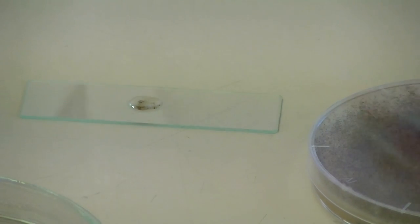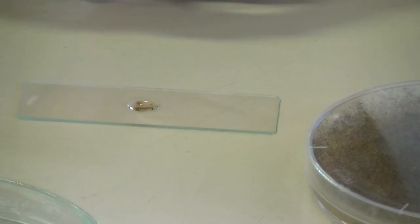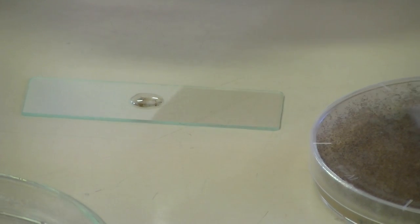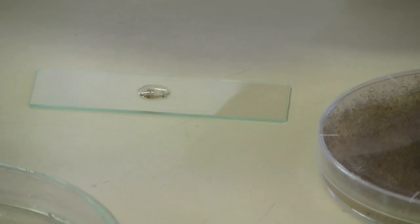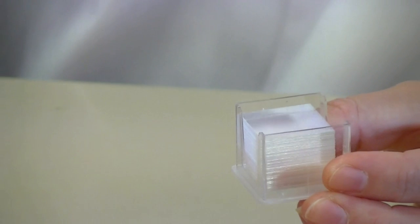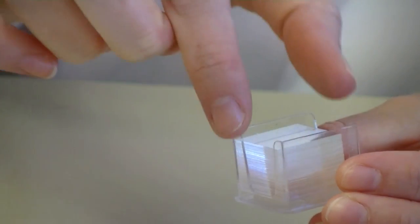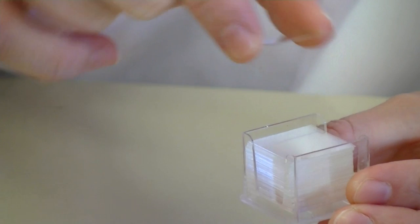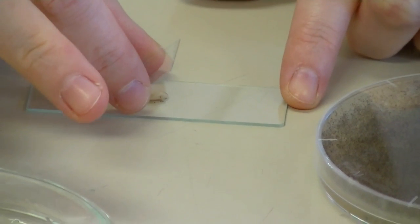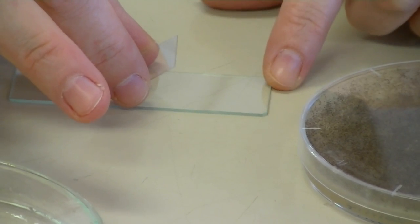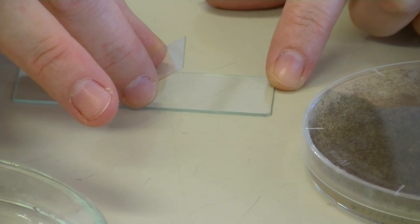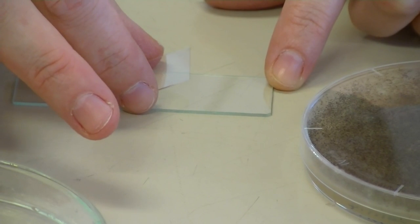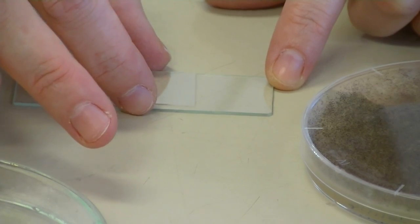And now we need to place a cover slip over our sample. So you should have a container of cover slips. Be very careful when removing the lid because you don't want them to fly all over the bench. Just grab the cover slip with the corners or the edges in between your fingers and then touch one edge to the bottom of the glycerol solution until it takes up and then quickly drop your cover slip on top.